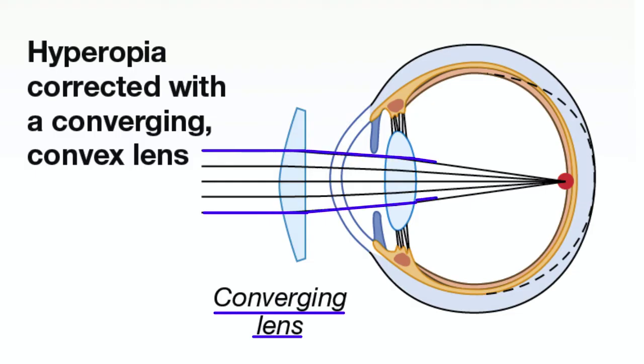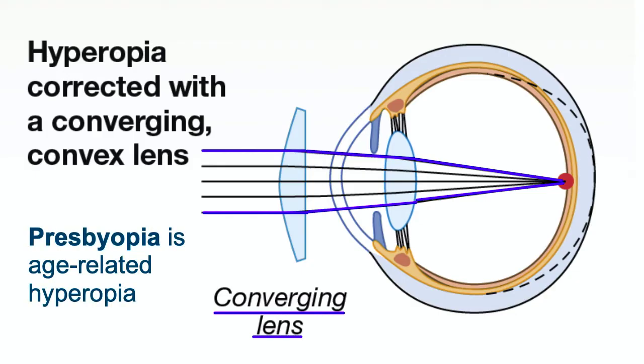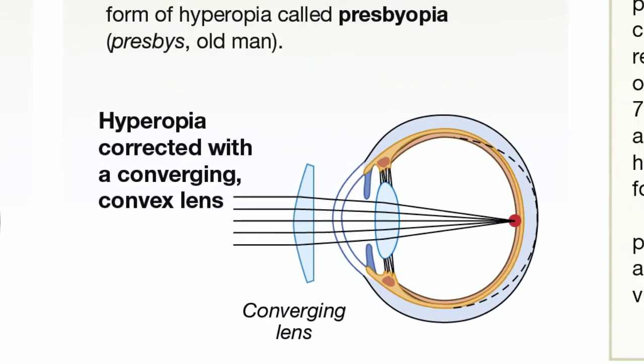It's very common that as people age and the lens loses elasticity, near objects become blurry. This form of hyperopia, called presbyopia, is why many adults require reading glasses.